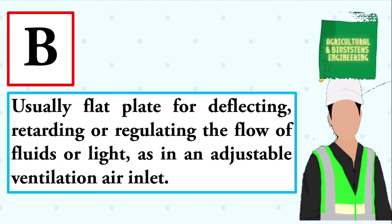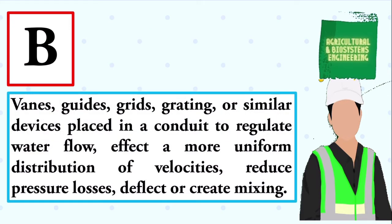Usually flat plate for deflecting, retarding, or regulating the flow of fluids or light, as in an adjustable ventilation air inlet. The answer is: baffle. Veins, guides, grids, grating, or similar devices placed in a conduit to regulate water flow, affect a more uniform distribution of velocities, reduce pressure losses, deflect or create mixing. The answer is: baffle.